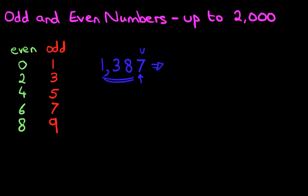Where is 7 in the two columns on the left? Here it is. Therefore, 7 is an odd number, and if 7 is an odd number, that means the whole number is odd: 1,387.